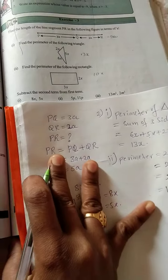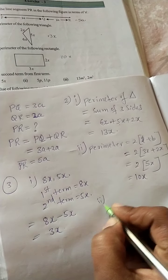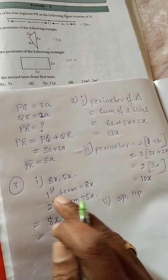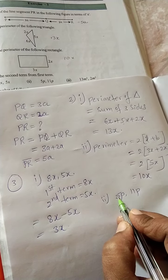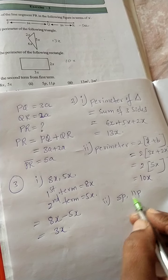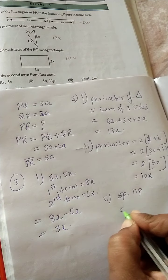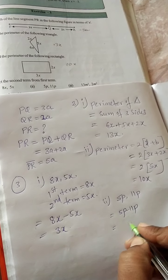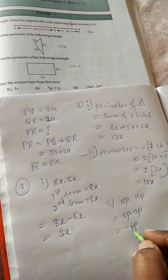In the same way for the remaining parts. Second one: 5p comma 11p. First term is 5p, second term is 11p. Subtract second from first: 5p minus 11p equals minus 6p.